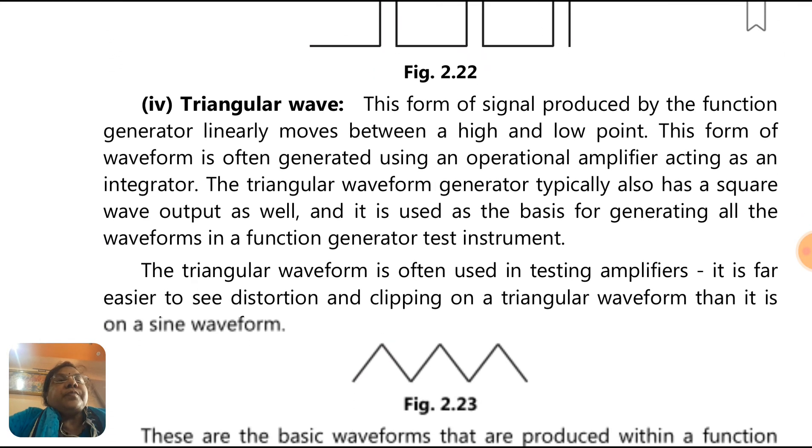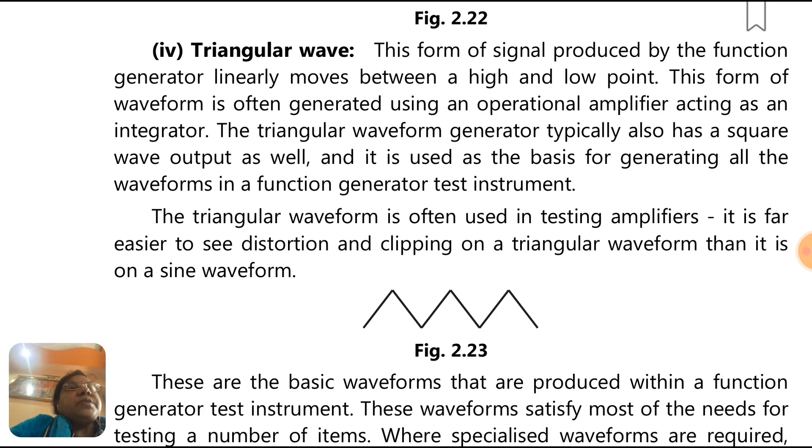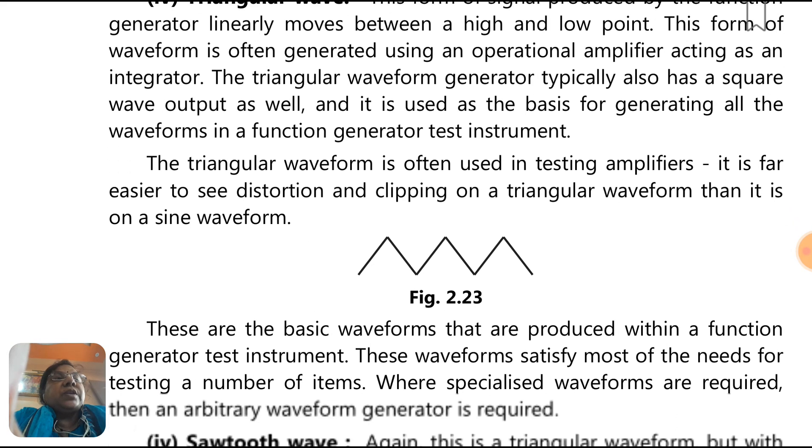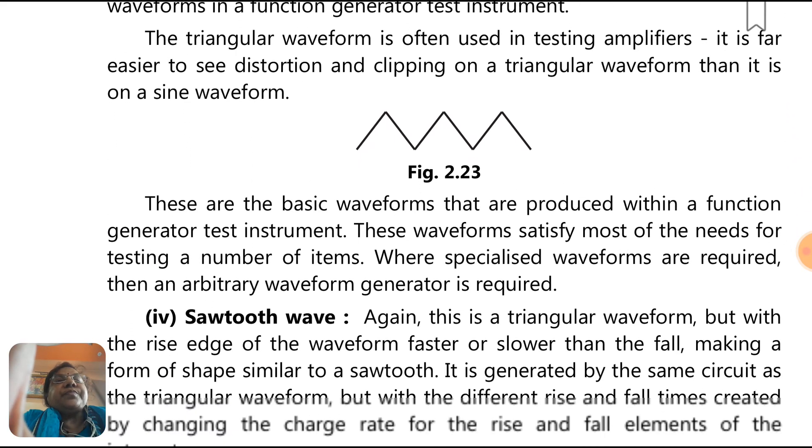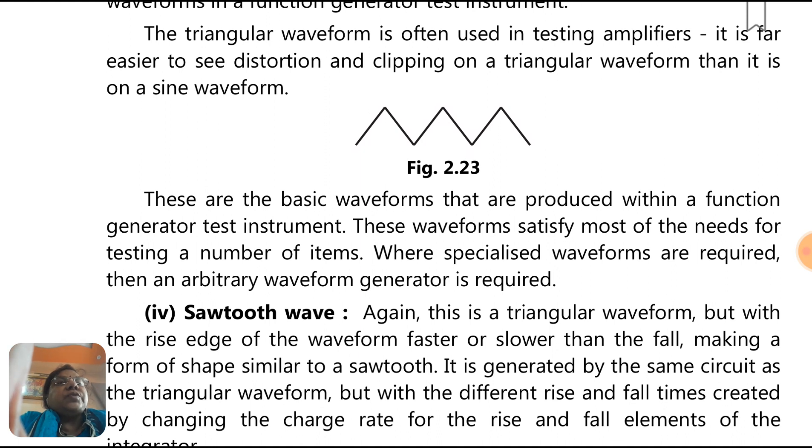Triangular wave: this form of signal produced by the function generator linearly moves between a high and low point. This form of waveform is often generated using an operational amplifier acting as an integrator. The triangular waveform generator typically also has a square wave output as well, and it is used as the basis of generating all the waveforms in a function generator test instrument. The triangular waveform is often used in testing amplifiers.